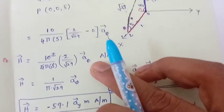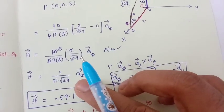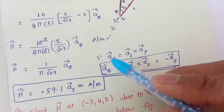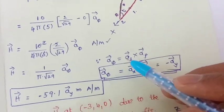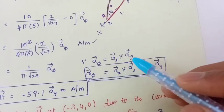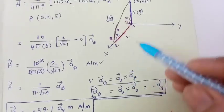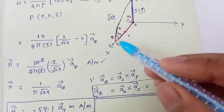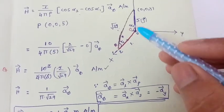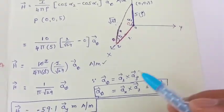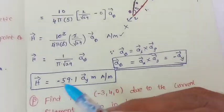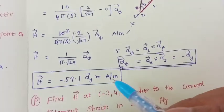To find the magnetic field intensity in terms of the Cartesian coordinate system: the unit vector along the phi direction equals the unit vector along the conductor direction cross the unit vector along the rho direction. The conductor direction is positive x, and the rho direction is z. Therefore ax cross az equals minus ay. The magnetic field intensity is computed accordingly.